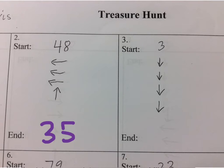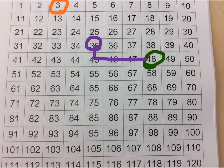For this one, the next one, we start on 3. And then we're going to go down, down, down, down. So start on 3, and we go down 4 times. And we finish on 43.